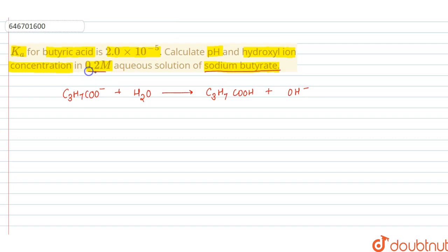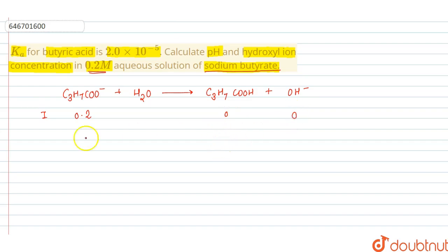We consider its initial concentration as 0.2 molar. The initial concentration of butyric acid is 0 and OH⁻ ions is also 0. At equilibrium, the concentration of butyric acid becomes x and OH⁻ also becomes x.